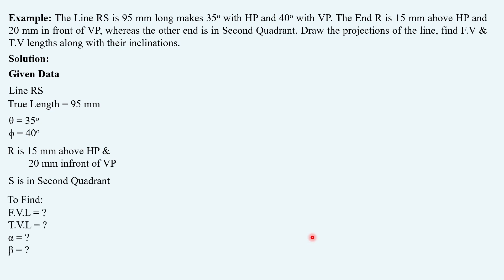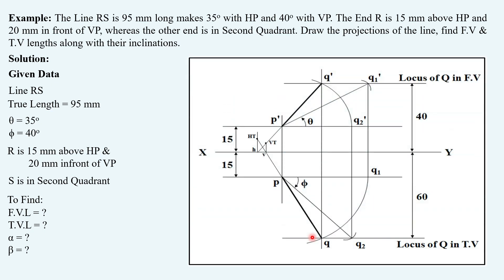To find, let us put this data on our normal solution in order to understand what is different in this question and how to proceed. So, this is our normal question, which has the line in single quadrant, that is first quadrant.